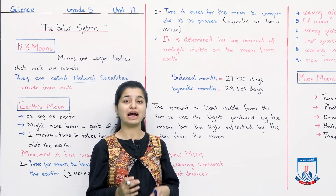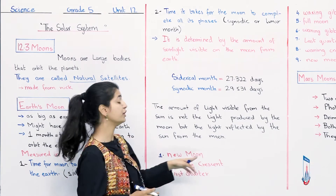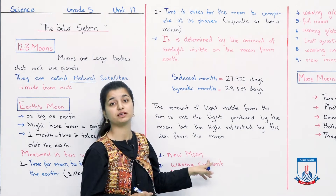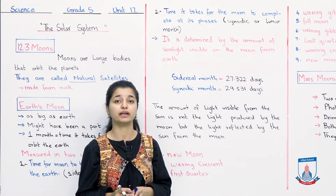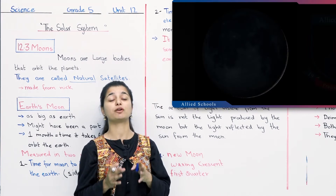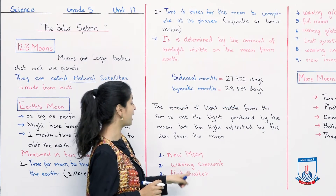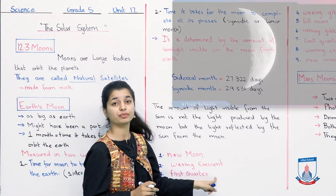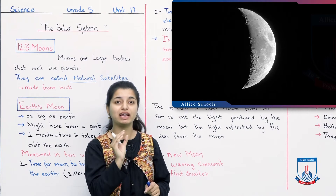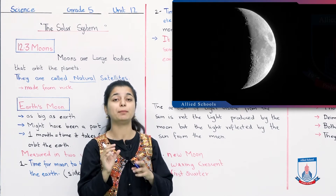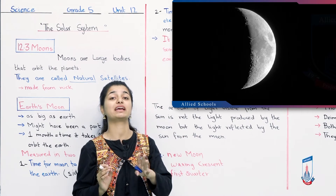Ab hum baat karte hai moon ke different phases ke baare mein. Sabse pahle hota hai new moon phase, jisme moon completely bilkul dark hota hai, aur woh suraj ki koi bhi light reflect nahi kar raha hota hai — aap upar picture mein bhi dekh sakte hai, apni book mein bhi dekh sakte hai, it's completely dark. Uske baad hota hai waxing crescent — again refer to the picture above. Waxing crescent mein ab aapka jo right wala hissa hai, right crescent shape ban gayi hai jahaan per light reflect ho raha hai, aur baaki jo teen hissa hai moon ke, woh suraj ki sare dark hai.